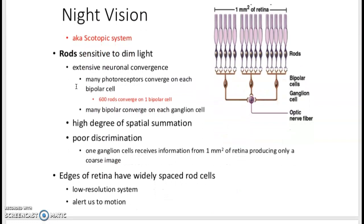So at night, we're using rods, they're sensitive to dim light, they converge excessively. You can see here, five rods per one bipolar cell, and then three bipolar cells to one ganglion cell to the optic nerve. So there are 15 rods for one optic nerve fiber. This allows us to have a high degree of spatial summation, but we have poor discrimination. Signal on this rod versus this rod get perceived exactly the same. So we do not have great discrimination at night.